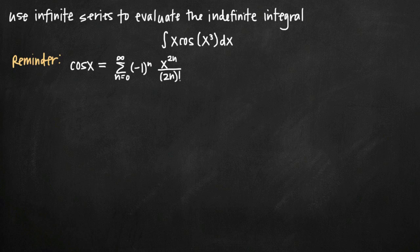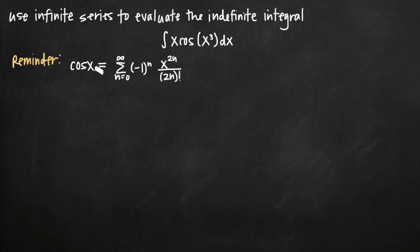Today we're going to be talking about how to use an infinite series to evaluate an indefinite integral. In this particular problem, we've been given the indefinite integral of x times cosine of the quantity x cubed dx, and we've been asked to evaluate this integral using an infinite series. I've written the formula for the infinite series of cosine of x, and we're going to be using that in order to find our integral.